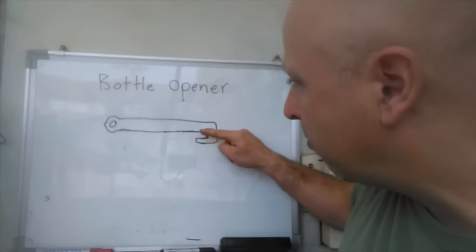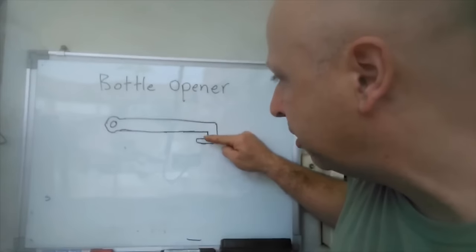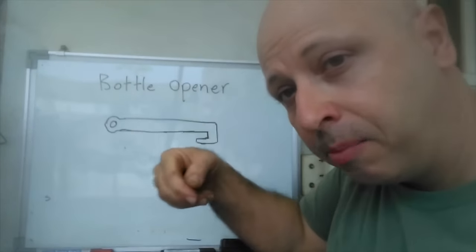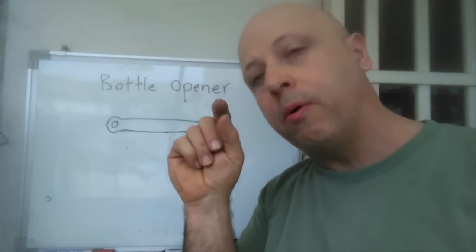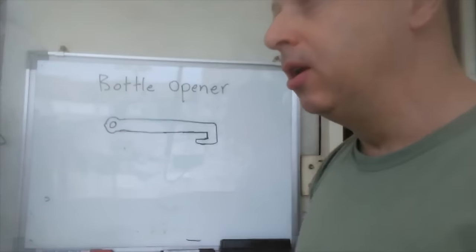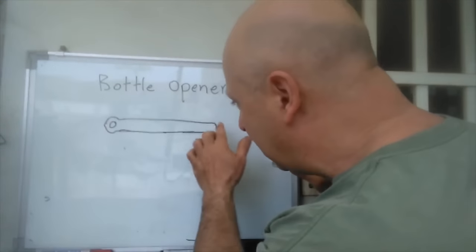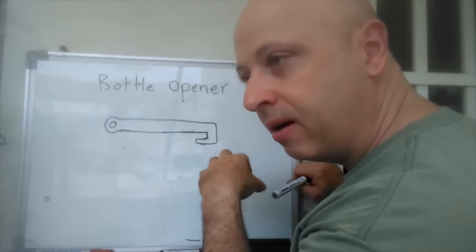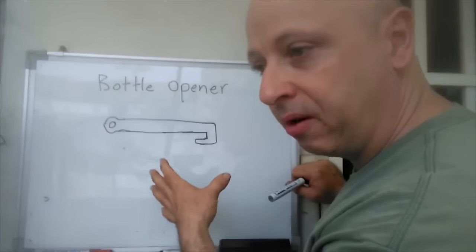And the distance between here, where there's pressure, and then where it's grabbing under the bottle cap should be about a quarter of an inch, which is about the height of a bottle cap. So if you achieve those things, it'll be a very useful bottle opener.